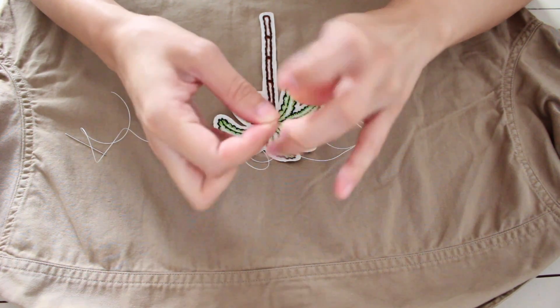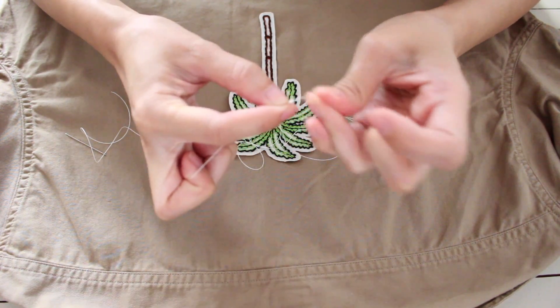Pin the patch down to keep it in place. Then, with a regular needle and thread, add the patch to the shirt jacket.